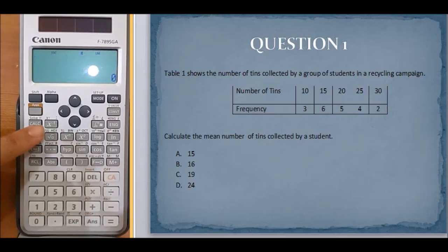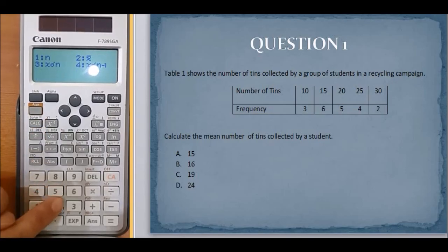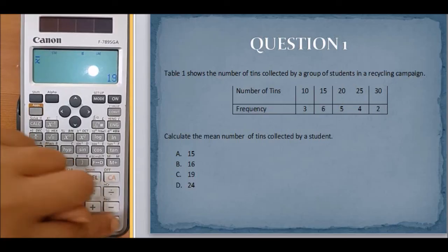OK, PA. To find mean, go to AC, number 5 and number 2 equals. And now you can see the answer is C, 19.